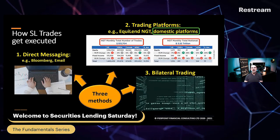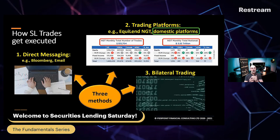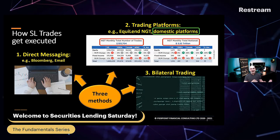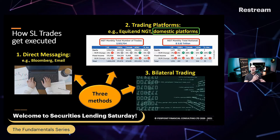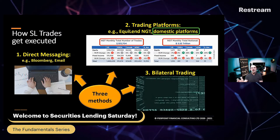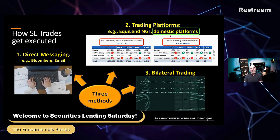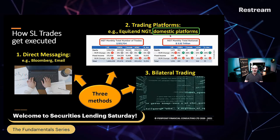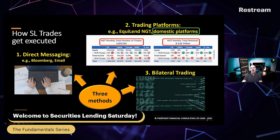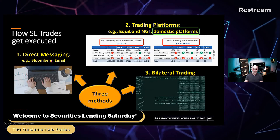There are really three different ways trades get executed. One is direct messaging — so I might want to borrow something from you, and I'll send you a direct message either in an email or a Bloomberg message or some other direct messaging system. Or it might be done on a trading platform. This slide came from last week's episode where I talked about trade execution, how you go from pre-trade to trade execution. The bit I've added today is the highlighted green box for domestic platforms, because there are a number of different ways of executing trades in different markets as well as the cross-border activity. And then there's bilateral trading — automated bilateral execution — as opposed to the direct one-to-one basis.